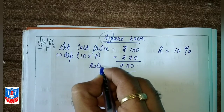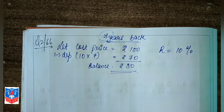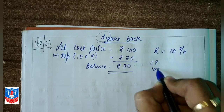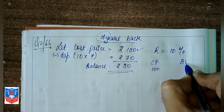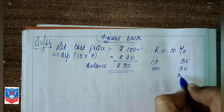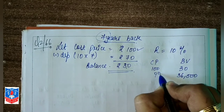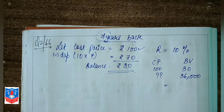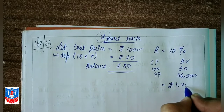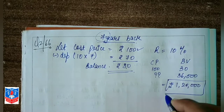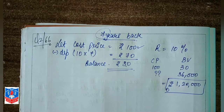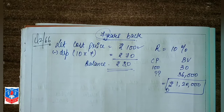After deducting depreciation of 70 from cost price of 100, the balance figure is 30. This is the current book value. Now we compare: if cost price is 100, book value is 30. The actual book value given is 36,000. So cross-multiplying: 36,000 into 100 divided by 30 gives us rupees 1,20,000 — this is the actual cost price of the machine.